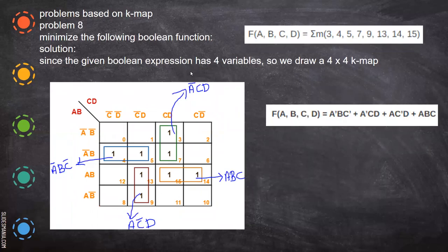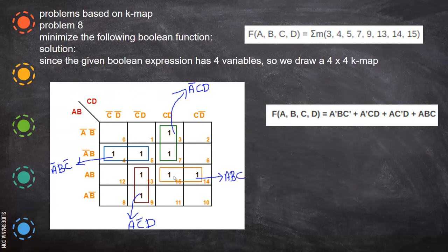Now we'll take another K-map problem: 3, 4, 5. There are no don't care conditions — so 3, 4 are definite conditions. All these combinations take 1. So 3, 1; 4, put 1; 5, 1; then 7, 1; and then 13, 14, 15 — 1. Now try to form the group. You cannot form a quad because continuous 4 is not there. But here you can form this, you can form a pair. And then you can form the overlapping, and you can have this equation. So all pairs are formed — instead of 4 pairs and 1 quad also, you can form.